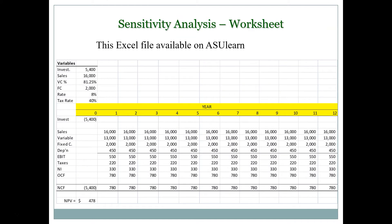At a required return of 8%, we get a positive NPV of $478,000. You can look at the Excel worksheet provided on As You Learn in the Chapter 11 materials folder. On the first tab, the project is laid out through all 12 years. Sales and costs are constant — variable costs are 81.25% of sales, fixed costs are $2 million, and we depreciate the asset investment at $2 million per year. EBIT minus taxes plus depreciation gives operating cash flow of $780,000.